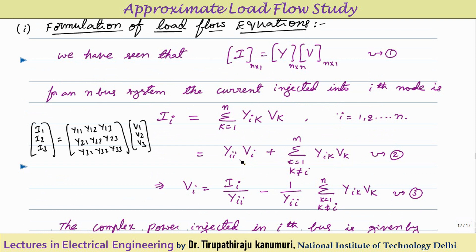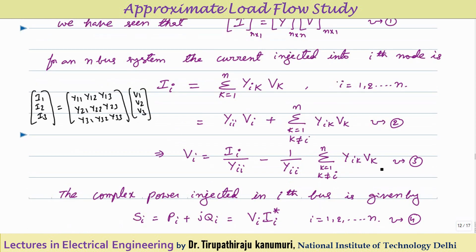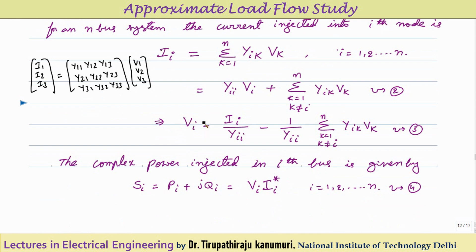From this I can calculate Vi. Vi equals Ii/Yii minus (1/Yii) times sigma k=1 to n, k≠i, of Yik*Vk. So if you know the value of the current, you can calculate the voltage, or vice versa. This we have already discussed in the previous lectures.